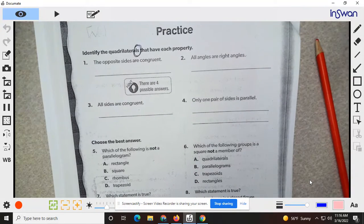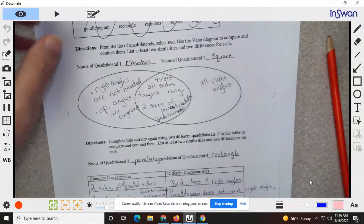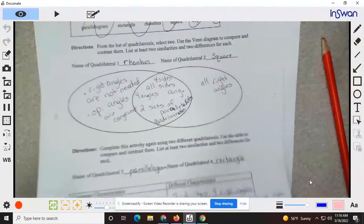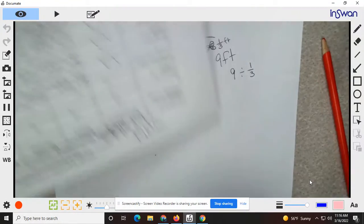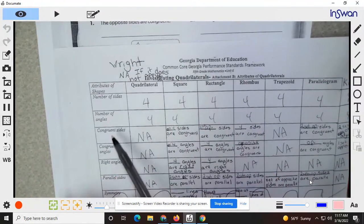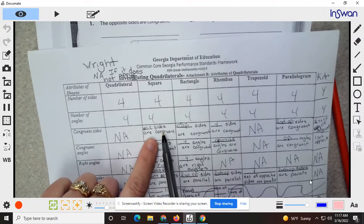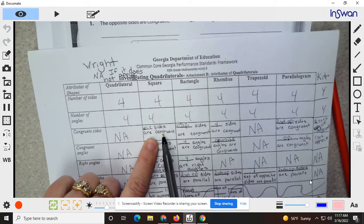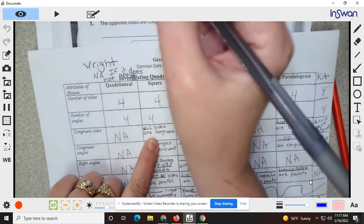If you look at your sheet that we did in class, opposite sides congruent, congruent sides. All four, well that means the opposites are. So we're square.